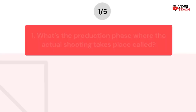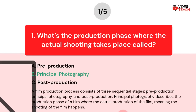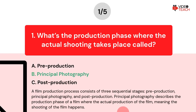The correct answer is Option B. A film production process consists of three sequential stages: pre-production, principal photography, and post-production. Principal photography describes the production phase of a film where the actual production of the film — meaning the shooting of the film — happens.